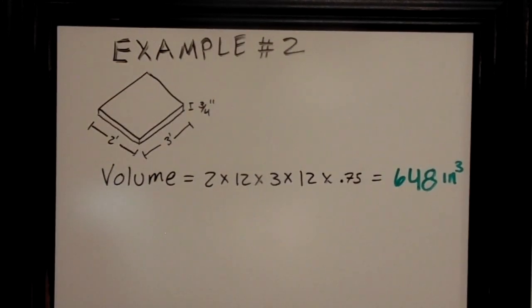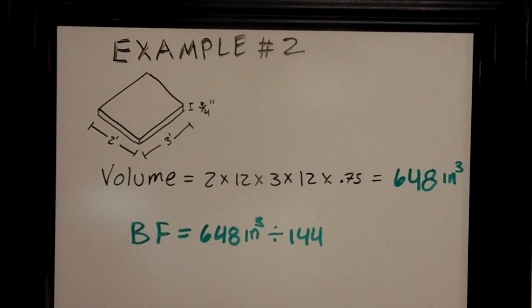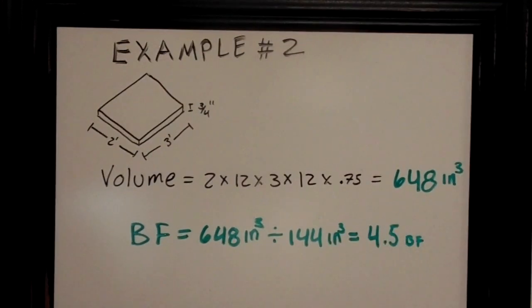Now that we know how many cubic inches, we can find the board footage. We do that by taking 648 inches cubed divided by 144, and that gives us 4.5 board feet.